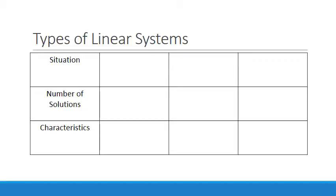The first thing we should talk about is just how many different ways can two lines interact with each other. Think about that for a second. One way is that they can intersect.